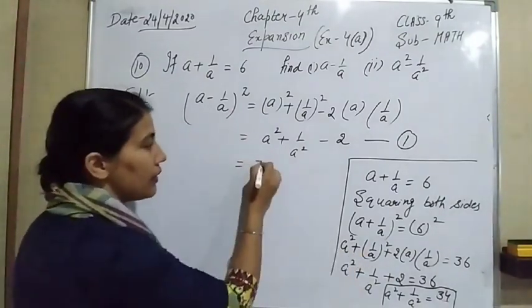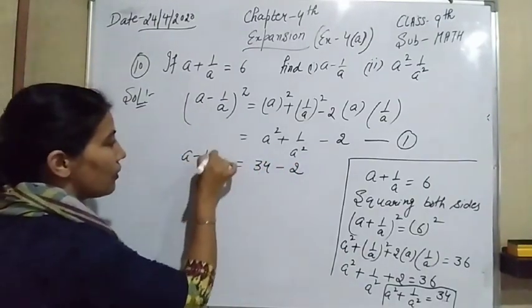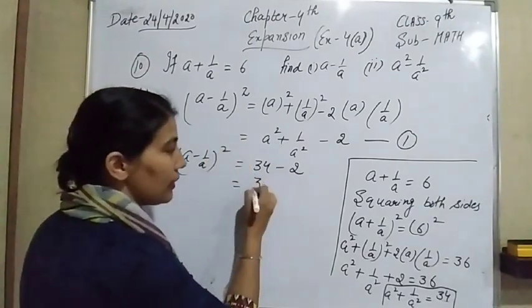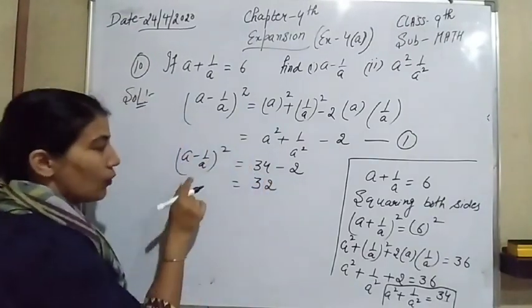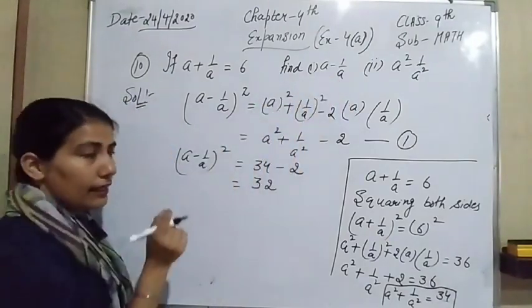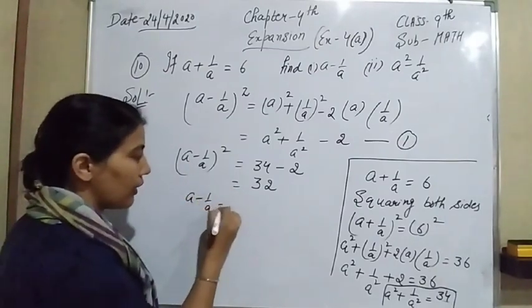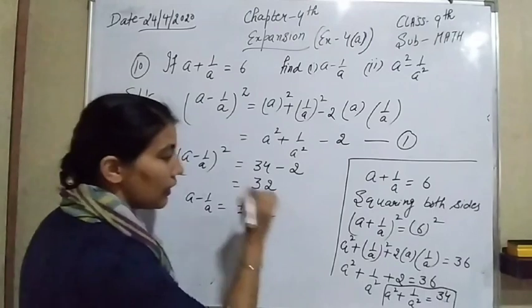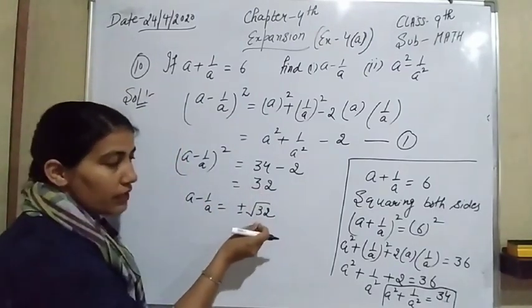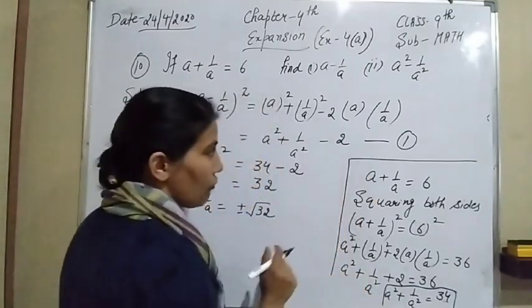Now put the value here: 34 minus 2 gives us A minus 1 over A whole square equals 32. So A minus 1 over A equals plus minus root 32. Now to find root 32, let's do the prime factorization of 32.